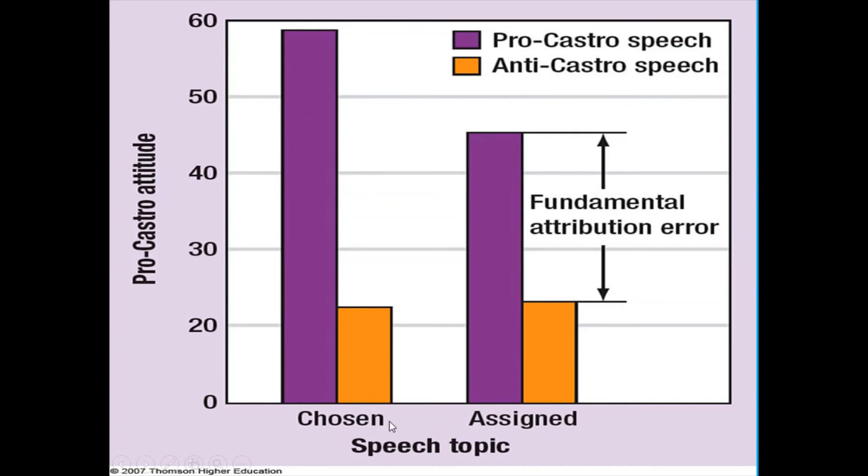In the assigned condition, these participants are told that the writer of the speech was assigned a particular stance. So they didn't get to pick whether they wanted to write a pro-Castro or anti-Castro speech. Instead, they were told you have to write a pro-Castro speech or you have to write an anti-Castro speech. After reading and evaluating the speeches, the participants are asked to estimate the pro-Castro attitude of the speech writer.